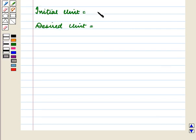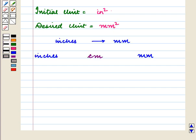The initial unit is square inches and the desired unit is square millimeters. So to convert inches into millimeters, we first convert inches into centimeters and then into millimeters.